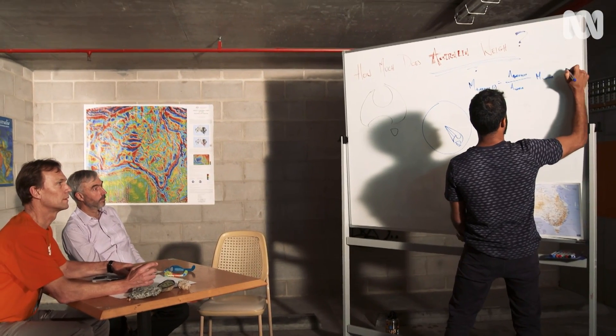Oh, 7.7 times 10 to the 6 kilometres squared. Kilometre squared. Sweet. Awesome. Alright. Divided by the surface area of the world times by the mass of the world.